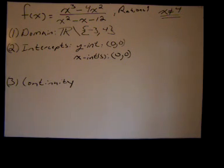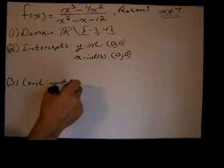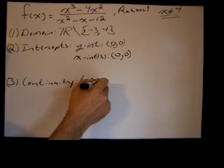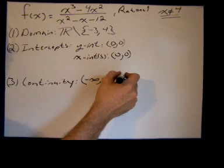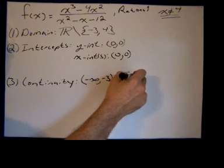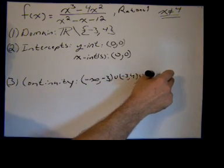Now we'll move on to the topic of continuity. Since this is a rational function, it's going to be continuous on its domain. So we can say its continuity holds from negative infinity to negative 3, union from negative 3 to 4, union from 4 to positive infinity.